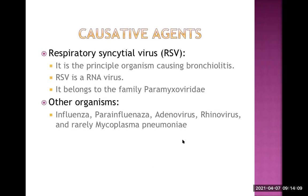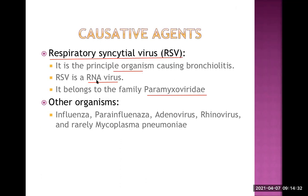What are the causative agents apart from respiratory syncytial virus? The most important cause is respiratory syncytial virus — it is the principal organism. RSV is an RNA virus and belongs to the family Paramyxoviridae. Other organisms include influenza virus, para-influenza virus, adenovirus, rhinovirus, and rarely the bacterium Mycoplasma pneumoniae. Most of them are respiratory viruses.